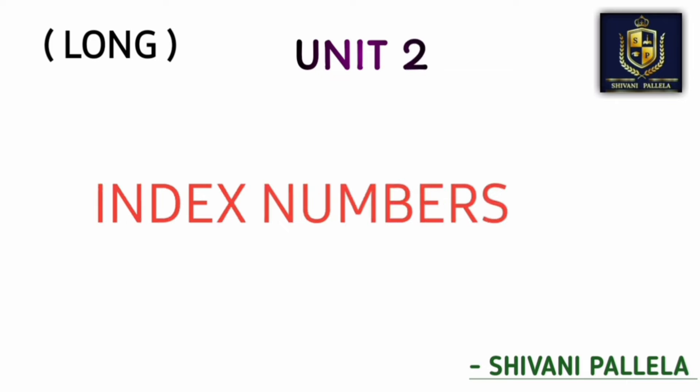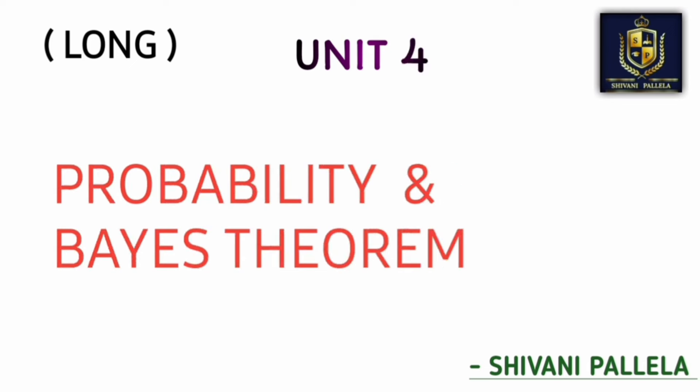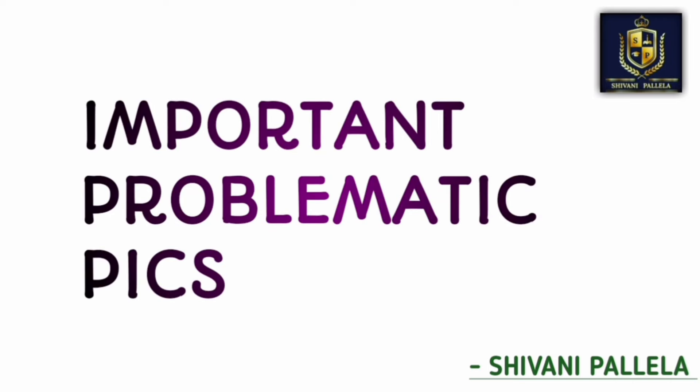If you are perfect with these five topics, you can easily score A or A-plus in Business Statistics. If you want to score O grade, from unit five you can learn one theory question — mostly Poisson distribution only they will ask — and probability also we are having a chance. So Poisson and Bayes' theorem, if you are already perfect with those, you are good.